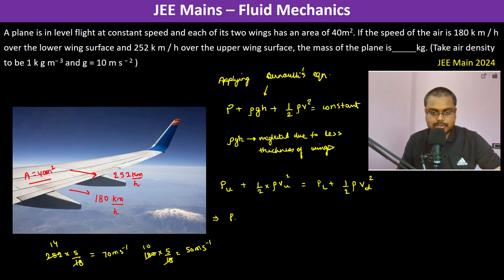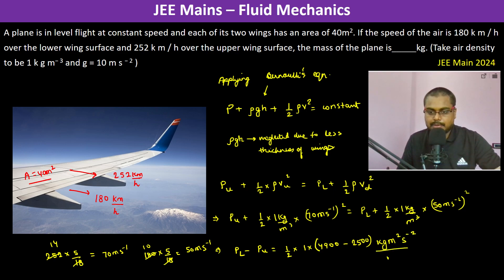Therefore, we can write pressure up plus half into rho. What is the density of the air? 1 kg per meter cube into 70 meter per second whole square should be equal to pressure low plus half into 1 kg per meter cube. Therefore, pressure lower minus pressure upper becomes half into 1 into 4,900 minus 2,500.